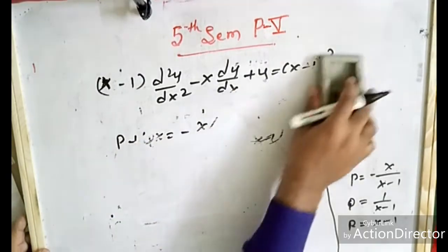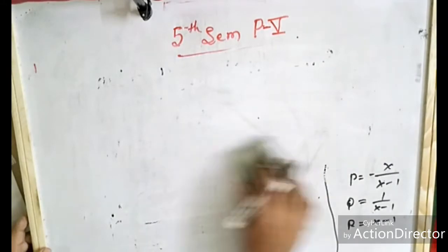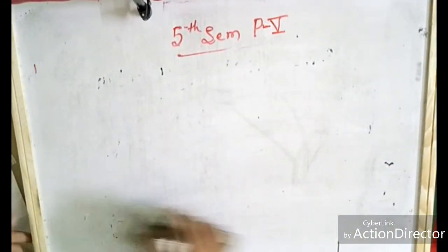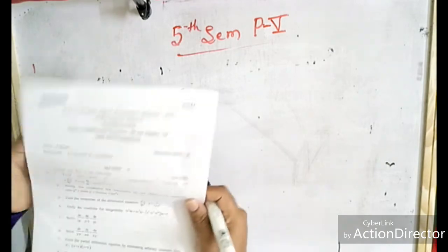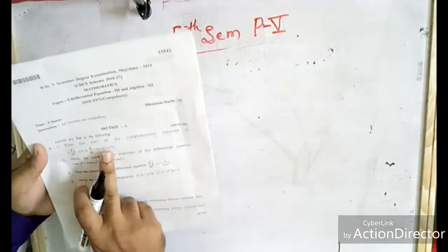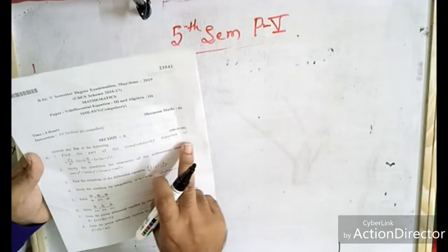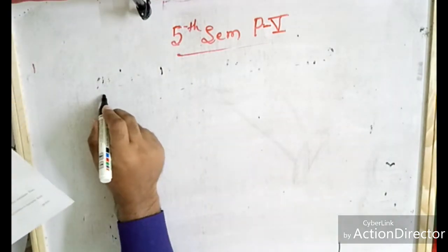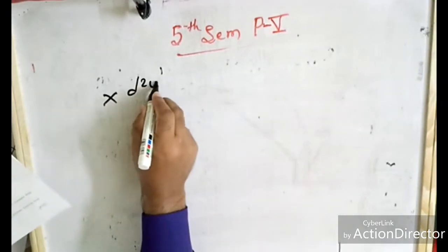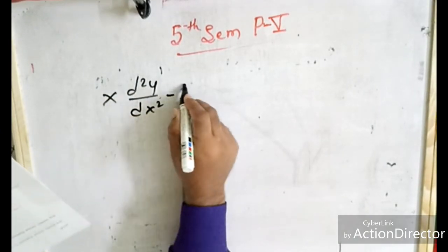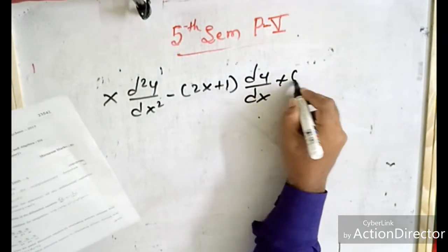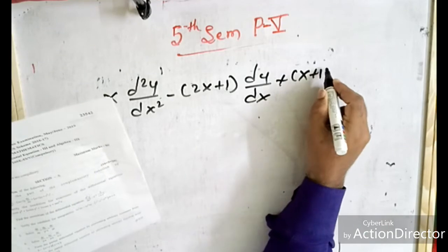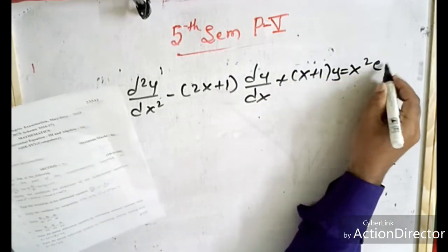For the 2019 question paper, similarly: find the part of the complementary function of x·d²y/dx² minus (2x plus 1)·dy/dx plus (x plus 1)·y, which is equal to x²·e^x.